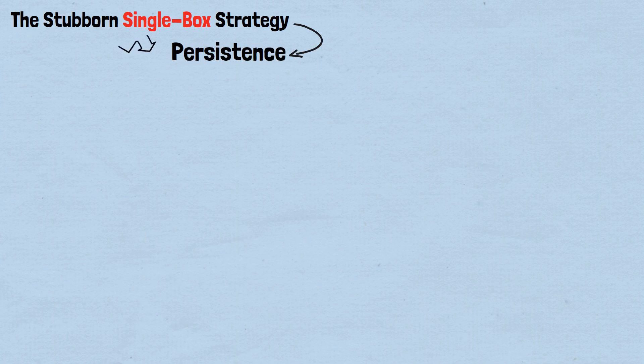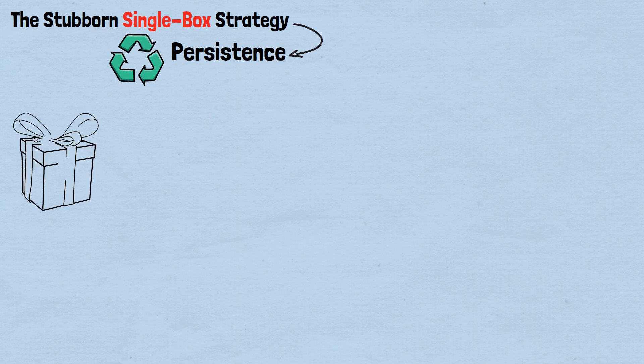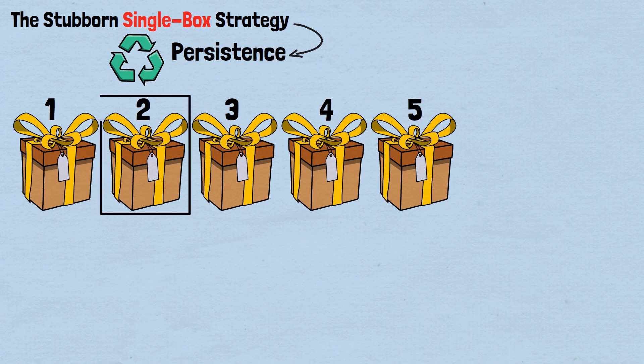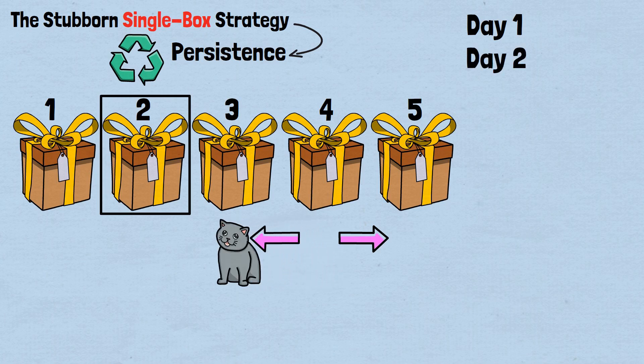Second, the stubborn single box strategy. Another seemingly logical approach is persistence. Keep checking the same box every day until you eventually catch the cat. This strategy fails for an even more interesting mathematical reason. Let's say you decide to check box 2 every single day. On day 1, unknown to you, the cat is in box 4. Night 1, cat moves from box 4 to either box 3 or box 5. Let's say it goes to box 3. Day 2, you check box 2. Cat is in box 3. Miss.